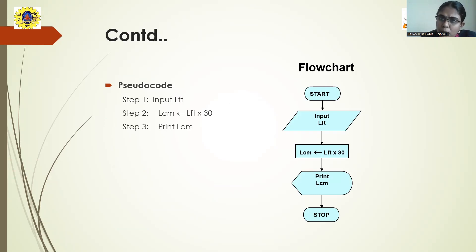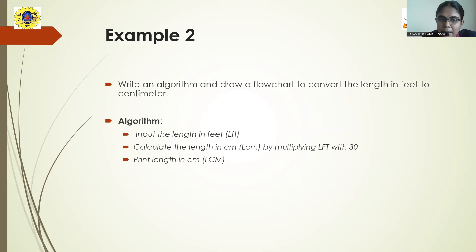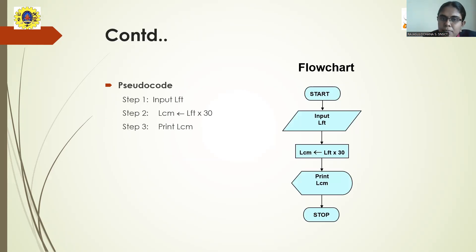In the algorithm you write 'start the process' and 'end the process', but those things are not required in pseudocode. For receiving the input, use the keyword 'input' or 'read': read length_in_feet. Next, instead of writing 'calculate the length in centimeter by multiplying length in feet by 30' in a conversational manner, write it as an expression: LCM = length_in_feet * 30. This value will be stored in LCM. For displaying the result, use the keyword 'print': print LCM. This is the pseudocode for calculating the length in centimeters given the length in feet.